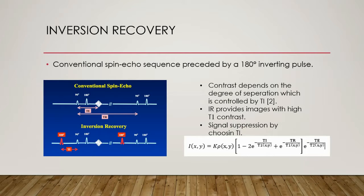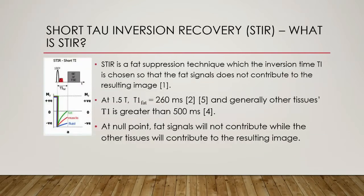Additional contrast effects are also obtained by varying TR and TE. So, what is STIR — short tau inversion recovery? STIR is a fat suppression technique in which the inversion time Ti is chosen such that the fat signals are suppressed and do not contribute to the resulting image. At 1.5 tesla, the T1 of fat is equal to 260 ms and generally other tissues have a T1 greater than 500 ms. So the amount of time to reach the null point, where there is an absence of longitudinal magnetization for the fat signal, is smaller than for other tissues.